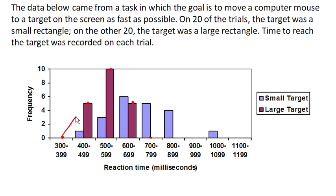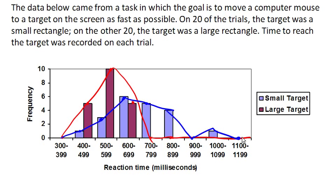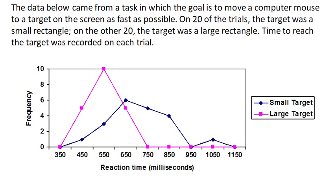This is a little misleading because we're not suggesting that values actually increase continuously that way, but it gives a better sense of trend than the histogram does. And this is what that ends up looking like. This again reinforces the idea that the large target values are a little smaller and more compact, whereas the small target scores appear to be more spread out and slightly larger.